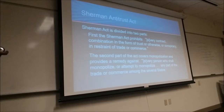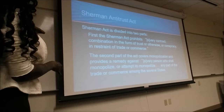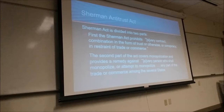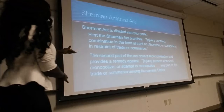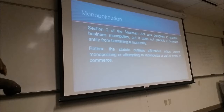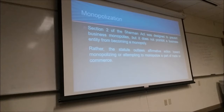The Sherman Antitrust Act is divided into two parts. First, it prohibits every contract, combination in the form of trust, or conspiracy in restraint of trade or commerce. The second part covers monopolization and provides a remedy against every person who shall monopolize any part of trade or commerce among the several states. Section 2 was designed to prevent business monopolies, but it does not prohibit a business from becoming a monopoly — rather, it outlaws affirmative action towards monopolizing trade or commerce.